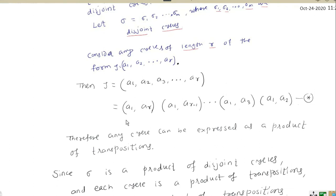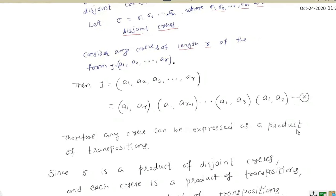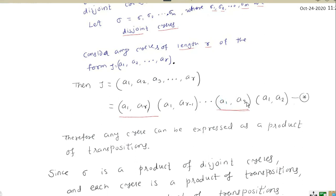When you compute this product you will get the cycle (a1, a2, ..., ar). For example, the image of a1 is a2. Starting from the right: a2 goes to a1, and a1 goes to a3 in the next transposition. Since a3 does not appear in previous transpositions to the left, a2 goes to a3. In this way the product of transpositions gives you the original cycle.